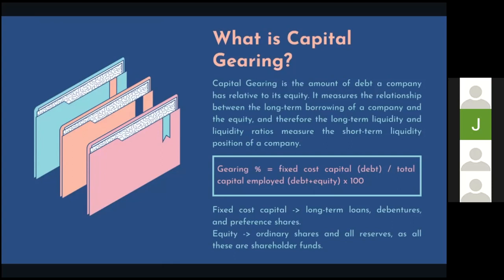The formula for capital gearing is fixed cost capital, which is debt, divided by total capital employed — debt plus equity — times 100%. Fixed cost capital includes long-term loans, debentures, and preference shares, while equity includes ordinary shares and all reserves, as all these are shareholder funds.